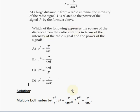Right, so we have to express the r squared, which is the square of the distance, in terms of two other variables, which are p and i. p is the power of the signal, i is the intensity of the radio signal.